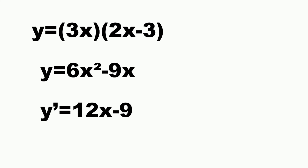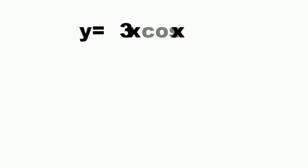But why use the product rule if there's a shortcut? The answer is that there are functions which cannot be shortcut, like y equals 3x times cosine x.